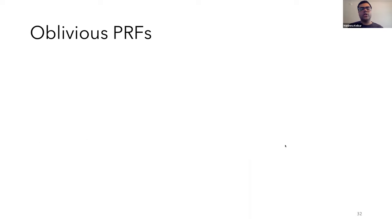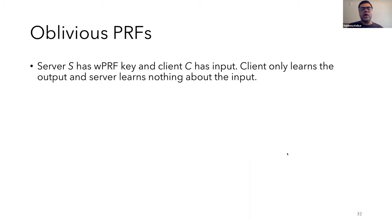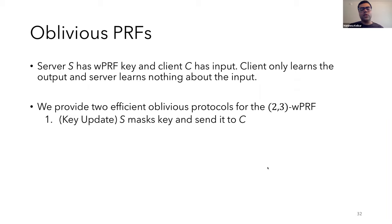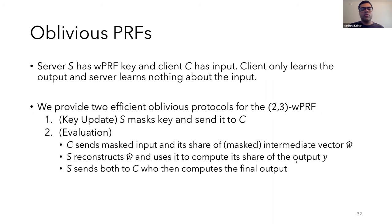I'll now briefly describe some of the applications that we considered. The first application I'll talk about is oblivious evaluation for PRFs. So here, there's two parties, the server who has the PRF key and the client who has the input. And the goal of the protocol is for the client to learn only the output while the server learns nothing about the input. And we'll provide two efficient protocols for the two-three weak PRF to compute it in an oblivious manner.